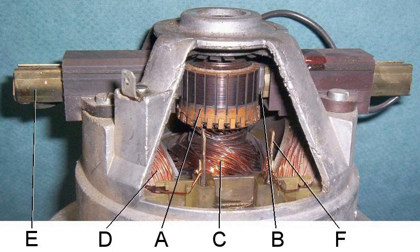A commutator consists of a set of contact bars fixed to the rotating shaft of a machine and connected to the armature windings. As the shaft rotates, the commutator reverses the flow of current in a winding. For a single armature winding, when the shaft has made one half complete turn, the winding is now connected so that current flows through it in the opposite of the initial direction.